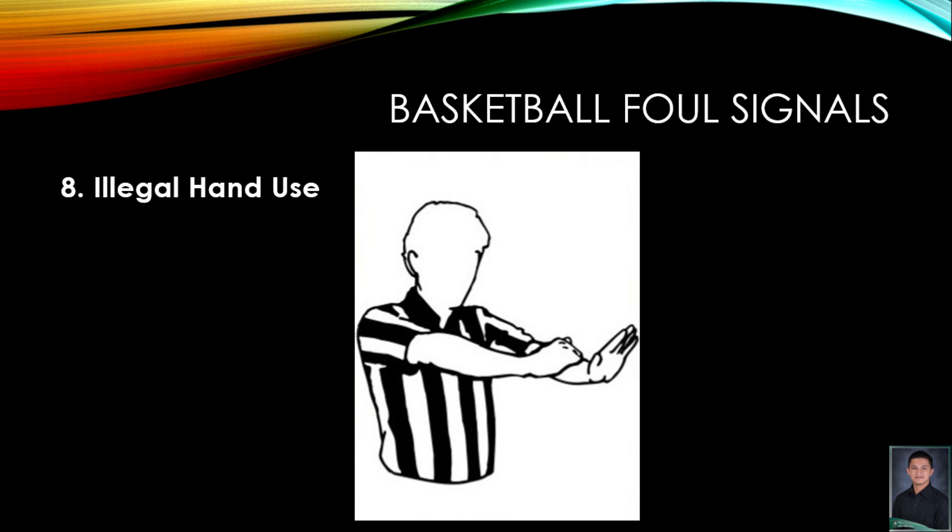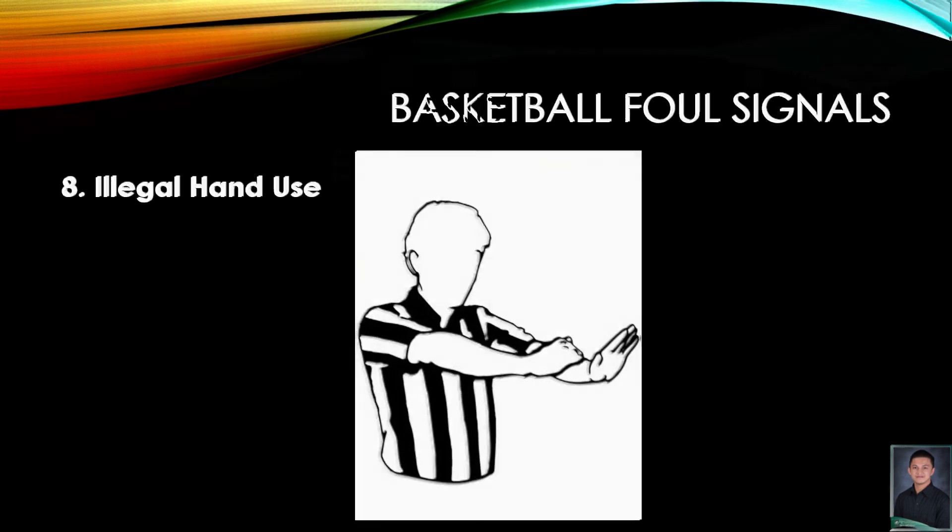An illegal hand use foul is called by the officiating officials by putting both of his hands in front of him at waist level and grabbing one of his wrists with the other hand. So that's it for today. Thank you for listening and I'll see you on the next video.